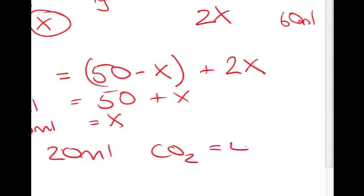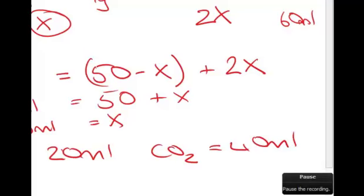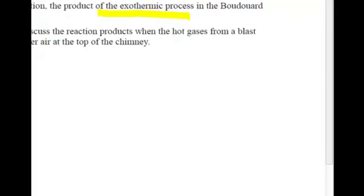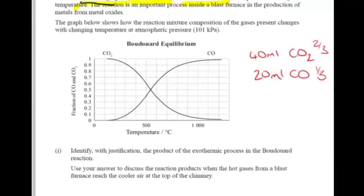Let's look at the actual graph from the previous question and see if we can interpret this. If we look at the graph, 40 mils CO2 and 20 mils CO. We're dealing with these ratios, so 20 to 40 is roughly one third of the total, 20 out of a total of 60 mils.